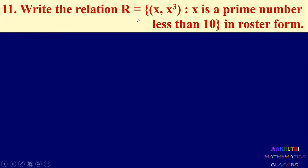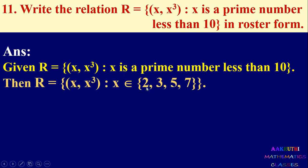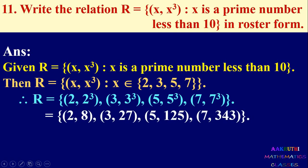Next problem: write the relation R = {(x, x³) : x is a prime number less than 10} in roster form. The prime numbers less than 10 are x = 2, 3, 5, 7. So relation is: x=2 gives (2, 8); x=3 gives (3, 27); x=5 gives (5, 125); x=7 gives (7, 343). Therefore R = {(2,8), (3,27), (5,125), (7,343)}.